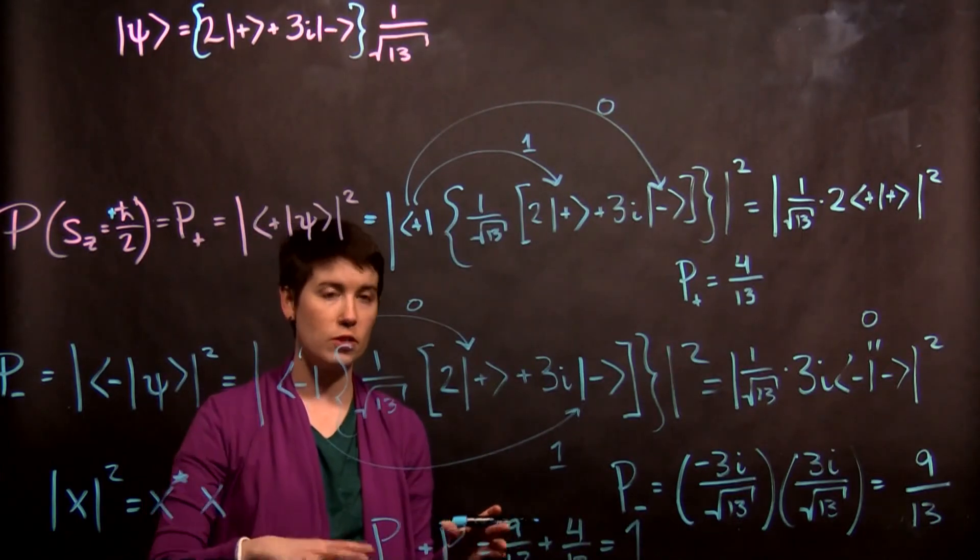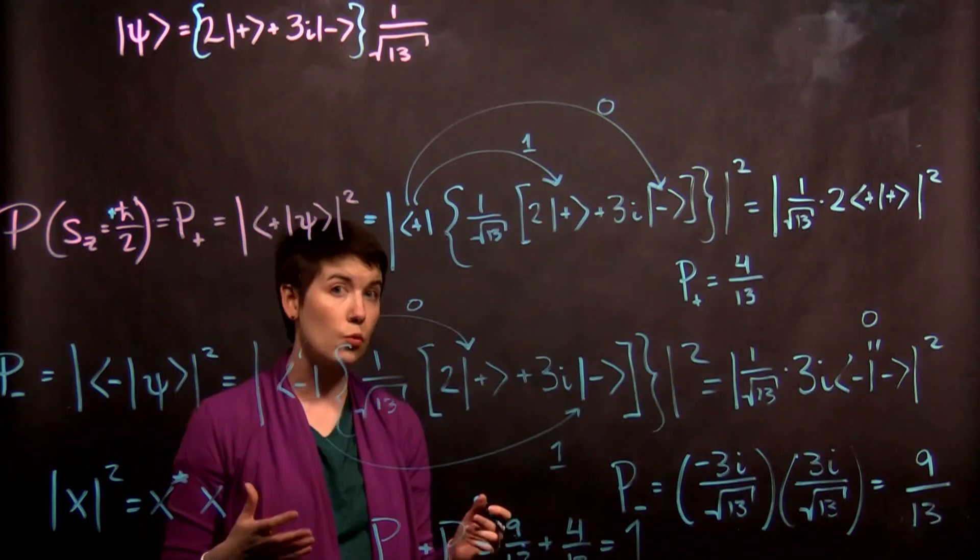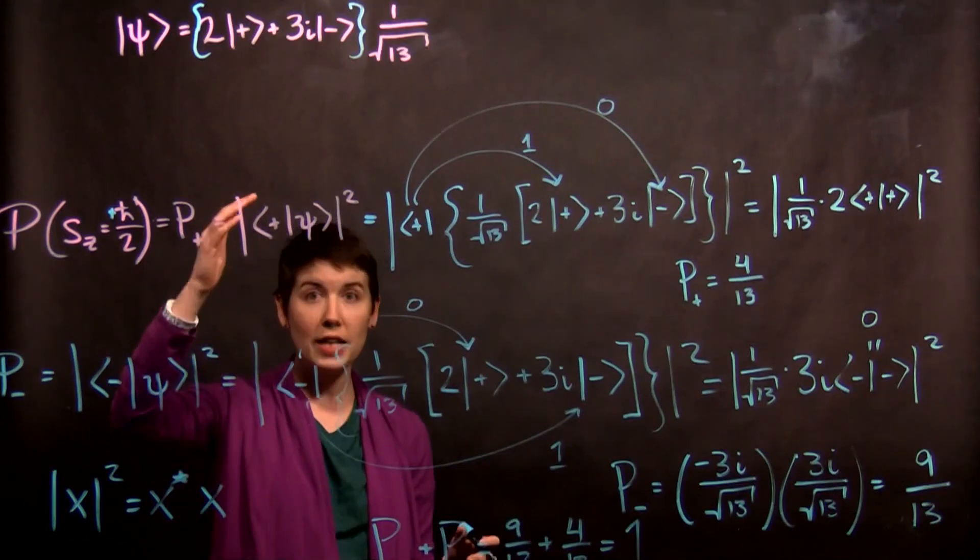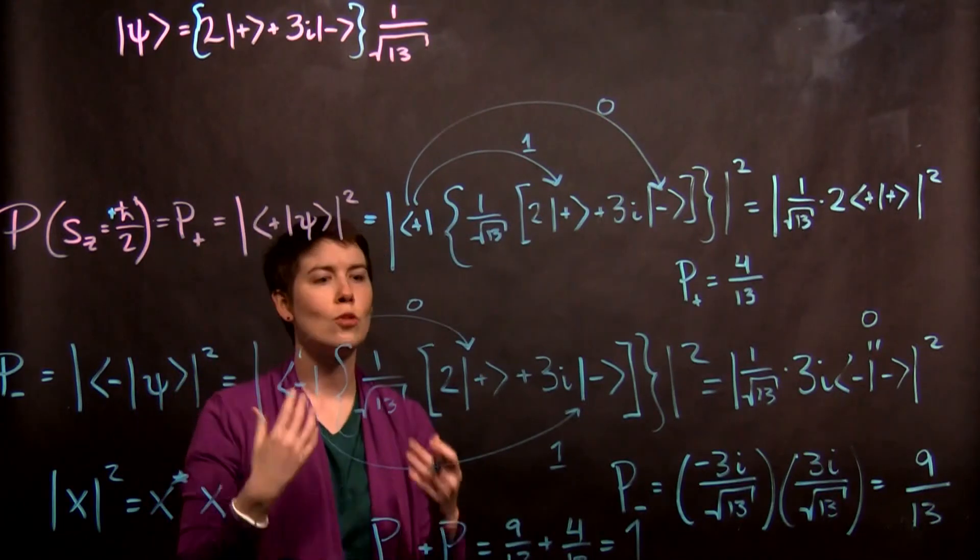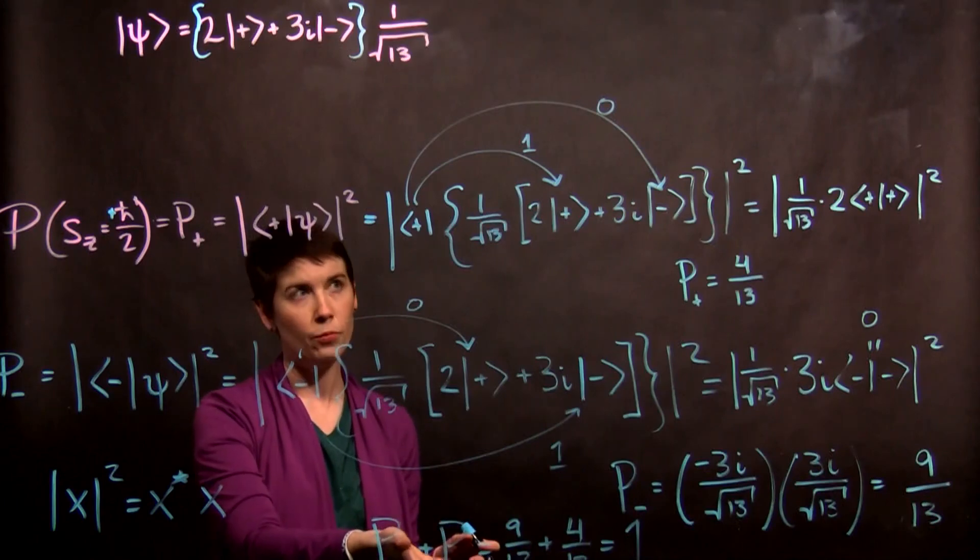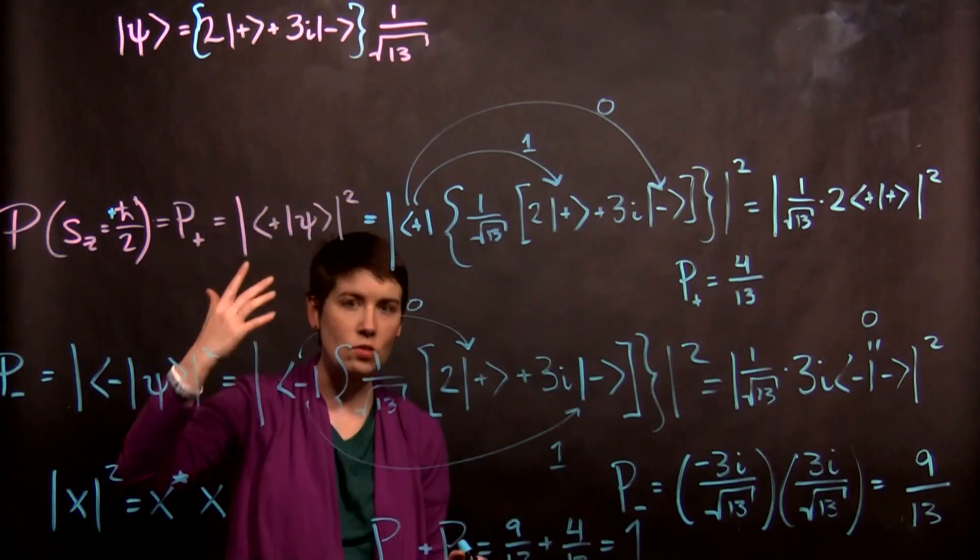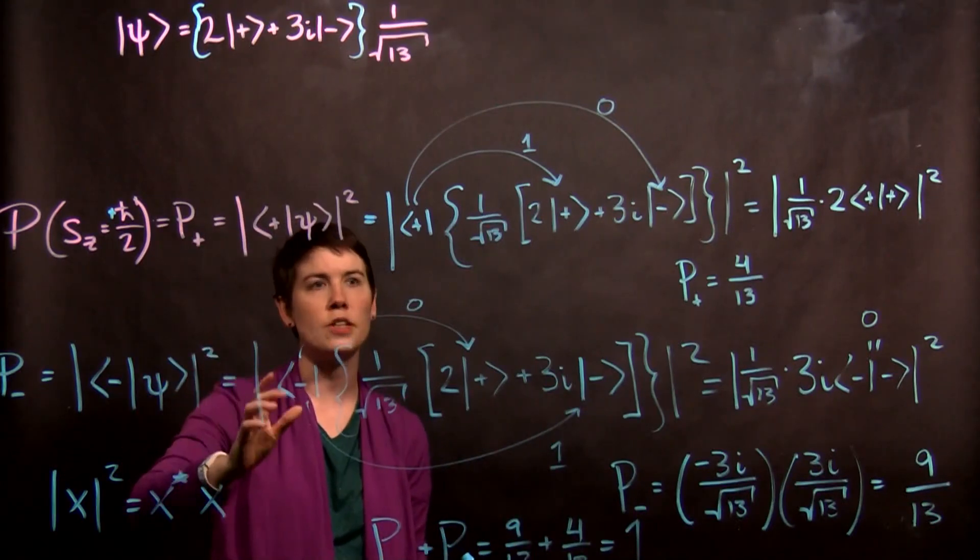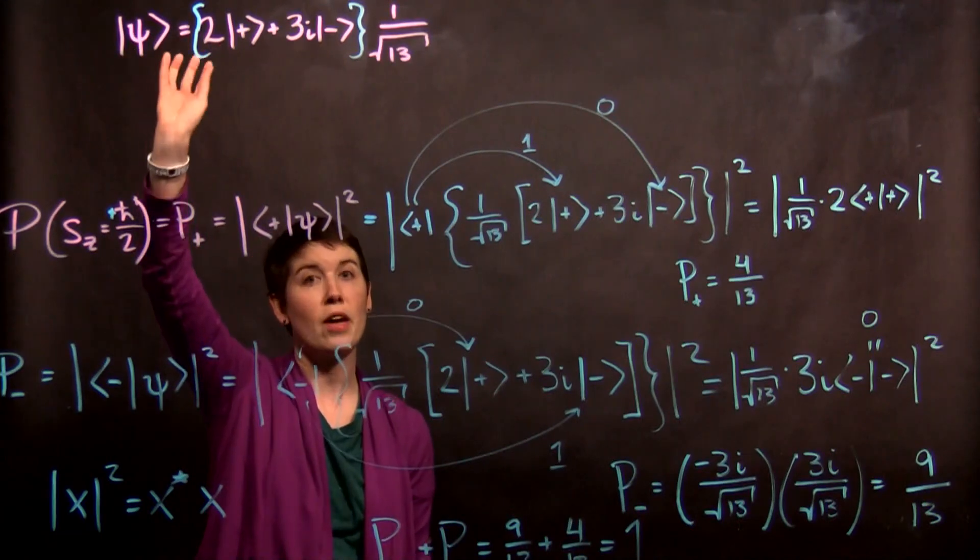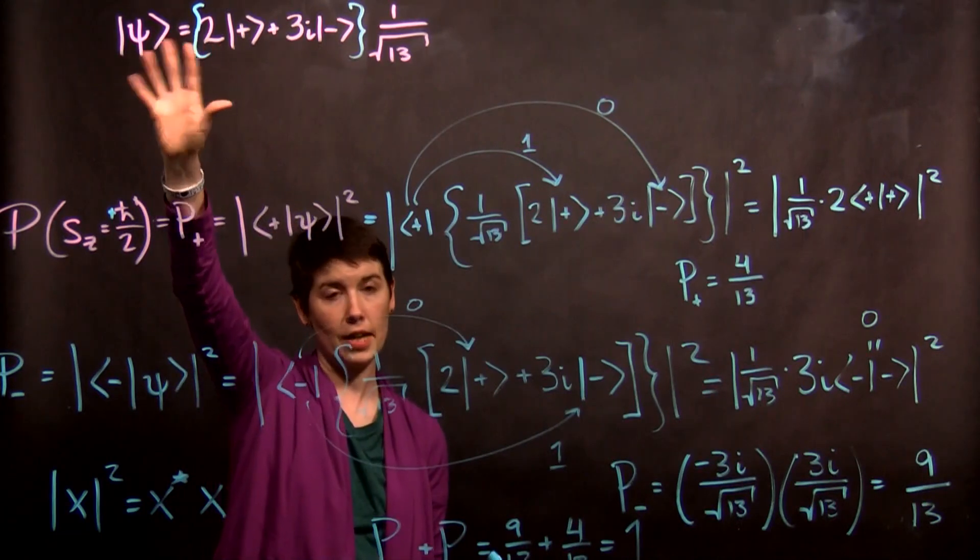If we were to look at, for instance, a spin one system that has three possible measurements, if you add up all possible measurements, you should get a probability of 1. So this is some practice in using this bra-ket notation, but always make sure that you start with that normalized ket state.